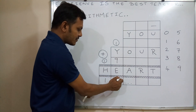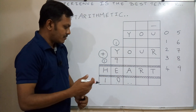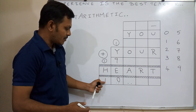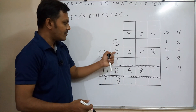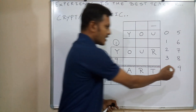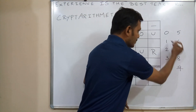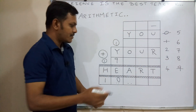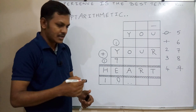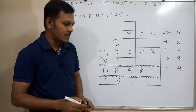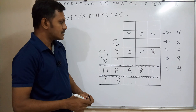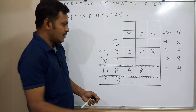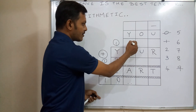Now we have assigned: alphabet H = 1, alphabet E = 0, alphabet Y = 9. We can strike out all these numbers. Wherever alphabet Y appears, we write number 9. Remaining: as I told you, keep concentrating only on carry-over 1.